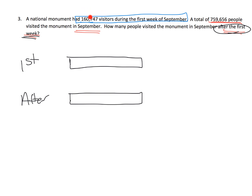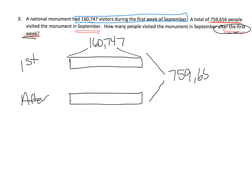Going back and reading: the national monument had 160,747 visitors during the first week of September, so that tells me we can fill in this length — that length is 160,747 visitors. Continuing to read: a total of 759,656 people visited the monument all of September. So the total goes right here — that's our 759,656 people. And then how many people visited after the first week — that's this length right here, and I'm going to put the big question mark.